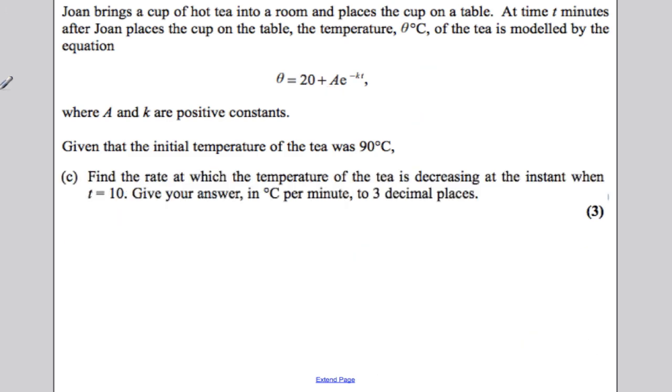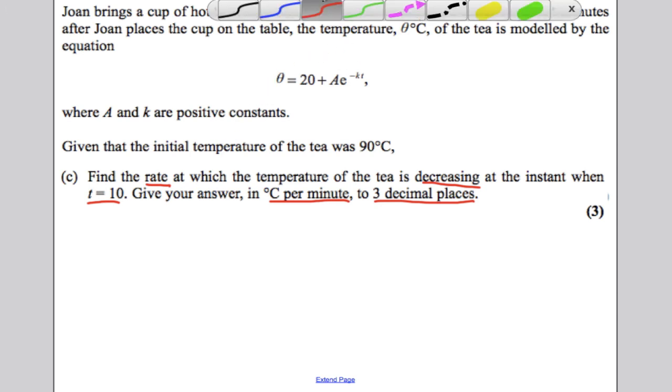Now, it then says, find the rate. Now, the key word here is rate, at which the temperature of the tea is decreasing at the instant when t is 10. Give your answer in degrees per minute to three decimal places. Now, rate of temperature decrease, they're asking you to differentiate. They want you to work out d theta by dt.